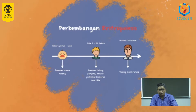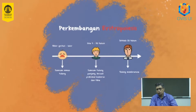Sumsum tulang merah yang bertanggung jawab pada produksi sel darah banyak ditemukan pada tulang pipih, seperti tulang panggul, sternum, temporal, tulang rusuk, dan tulang vertebra, serta pada metafisis pada ujung-ujung epifisis tulang panjang, seperti femur, tibia, dan tulang lainnya yang jenis tulangnya berongga.